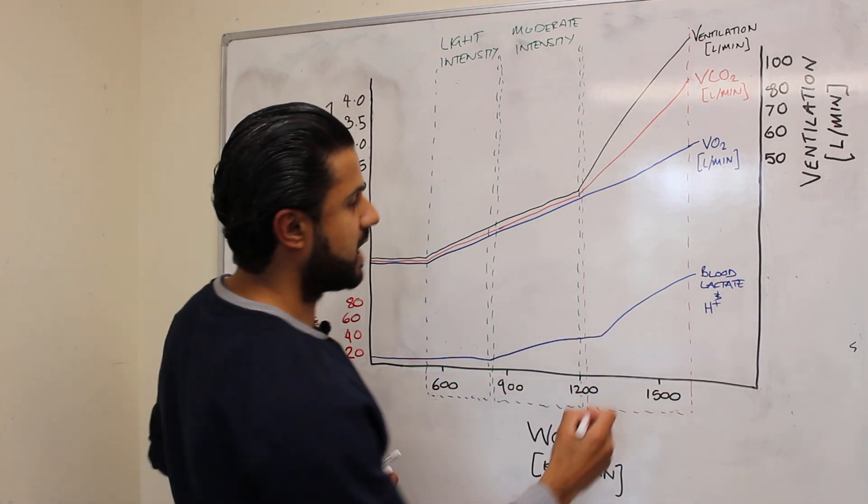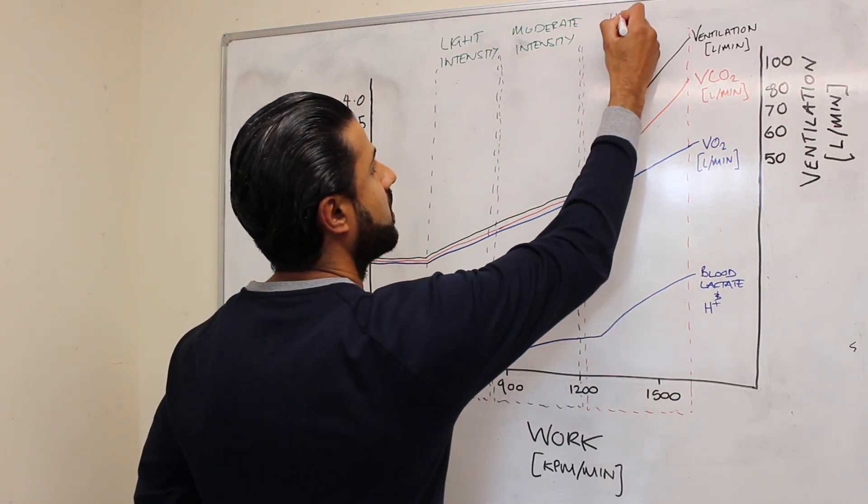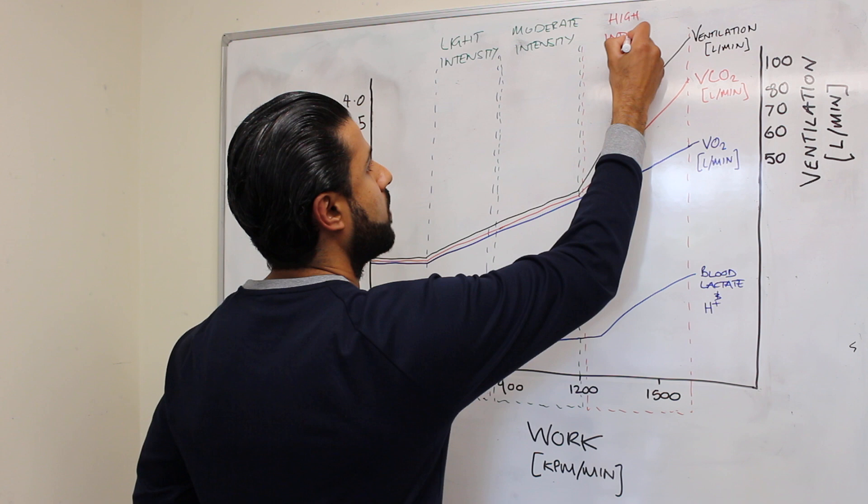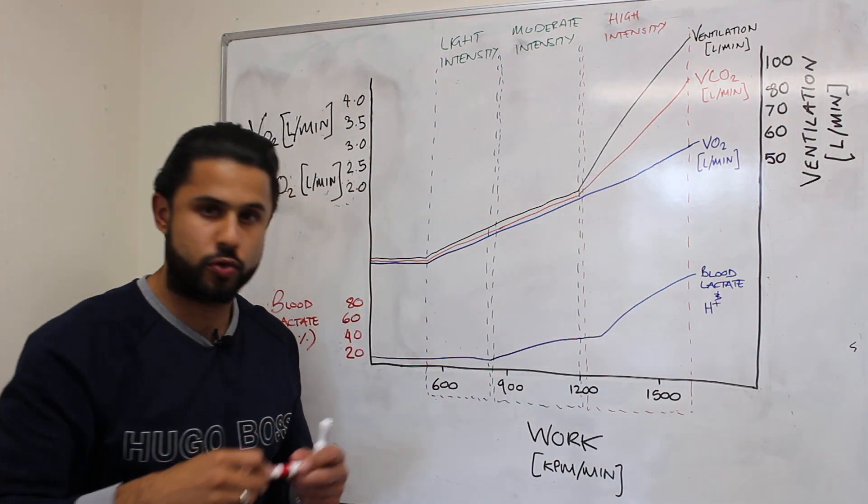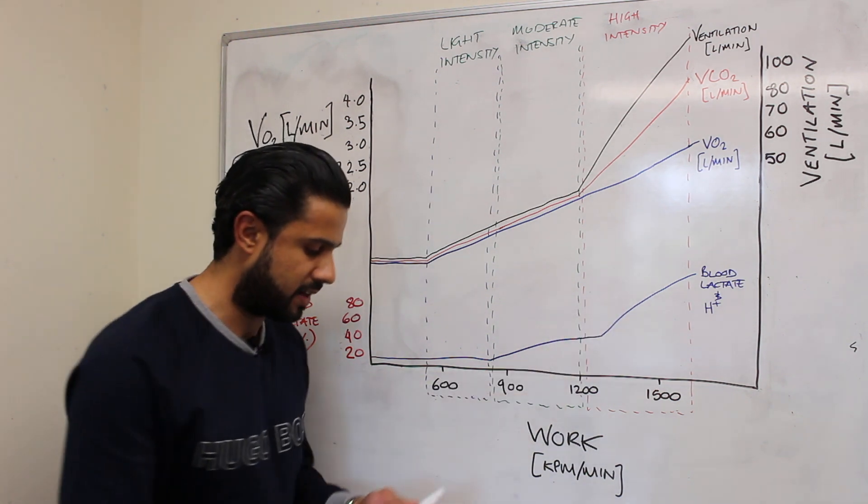And then of course the last stage is high intensity. This is an intensity which the runner can only sustain for a short amount of time because it will result in an increase in lactate.